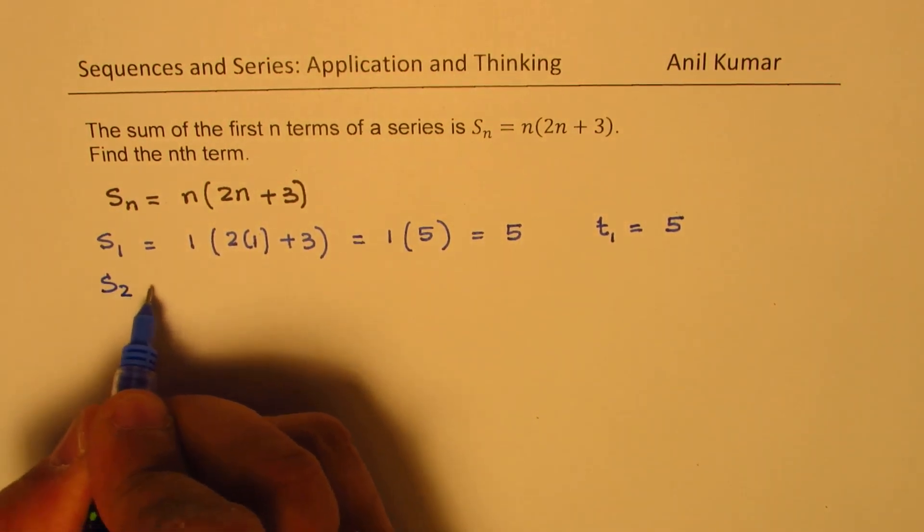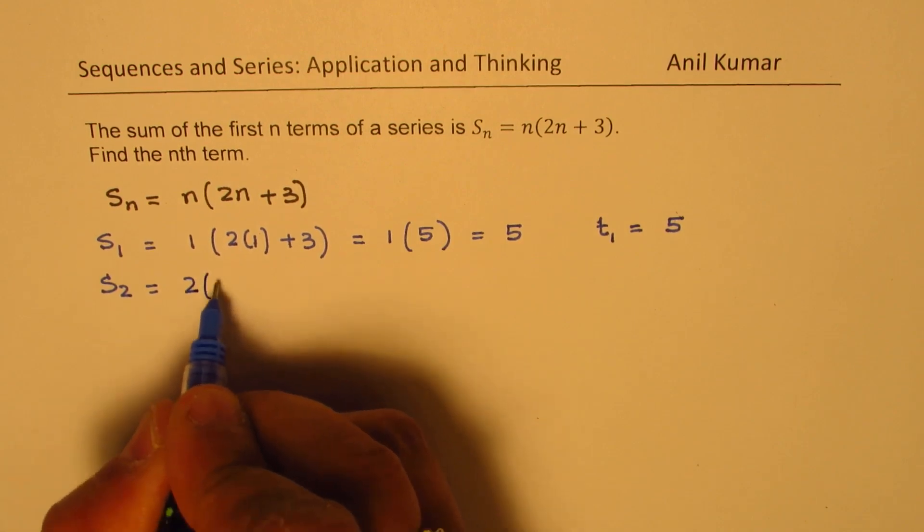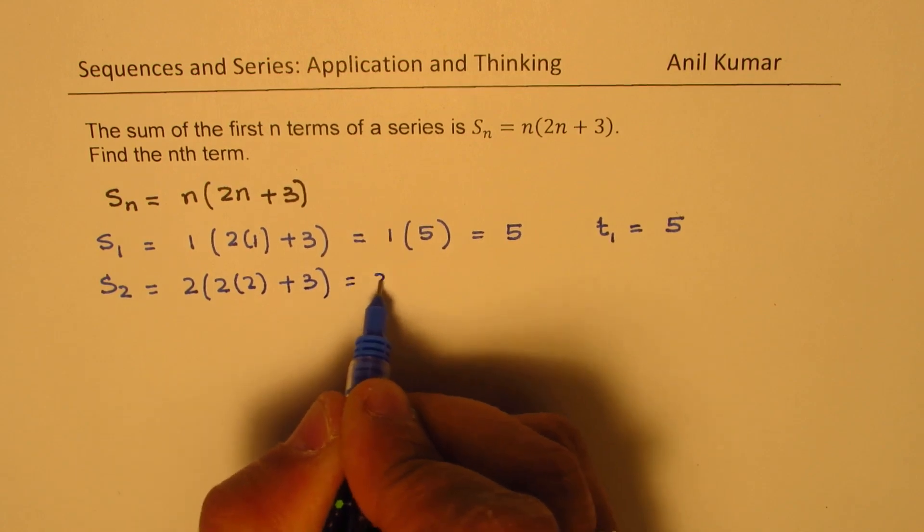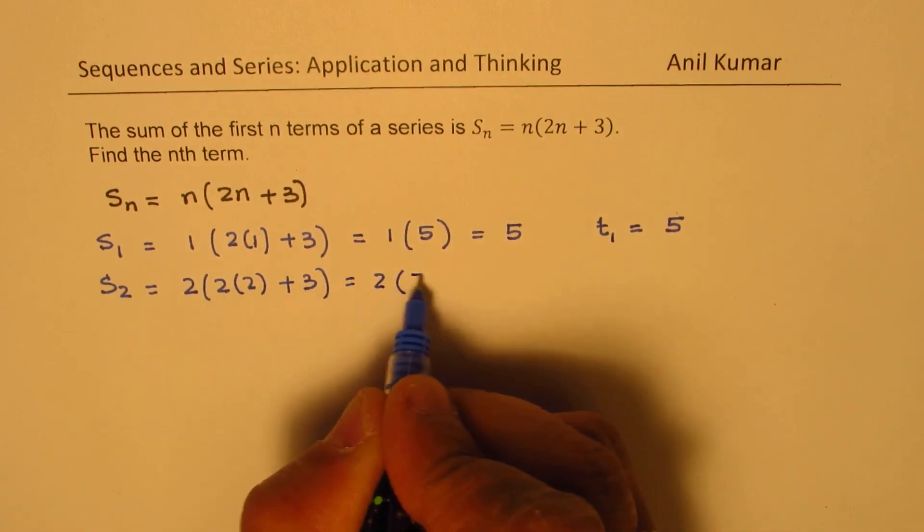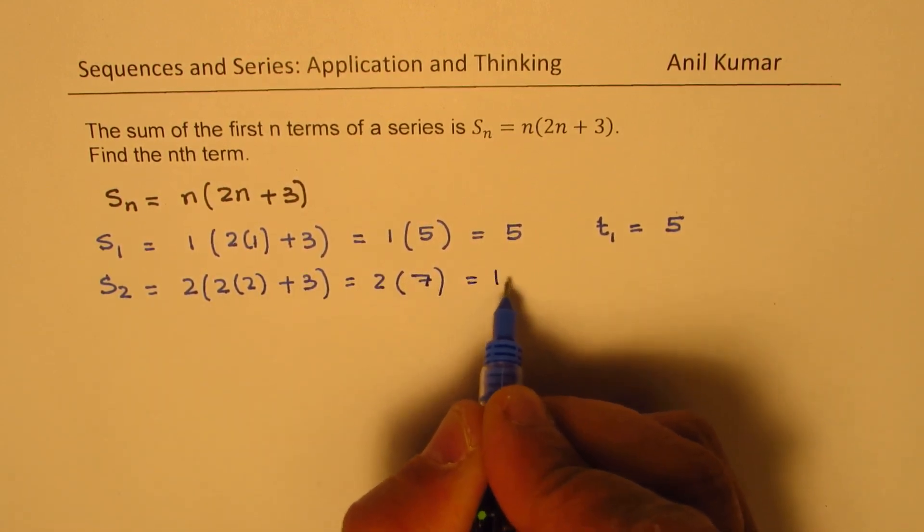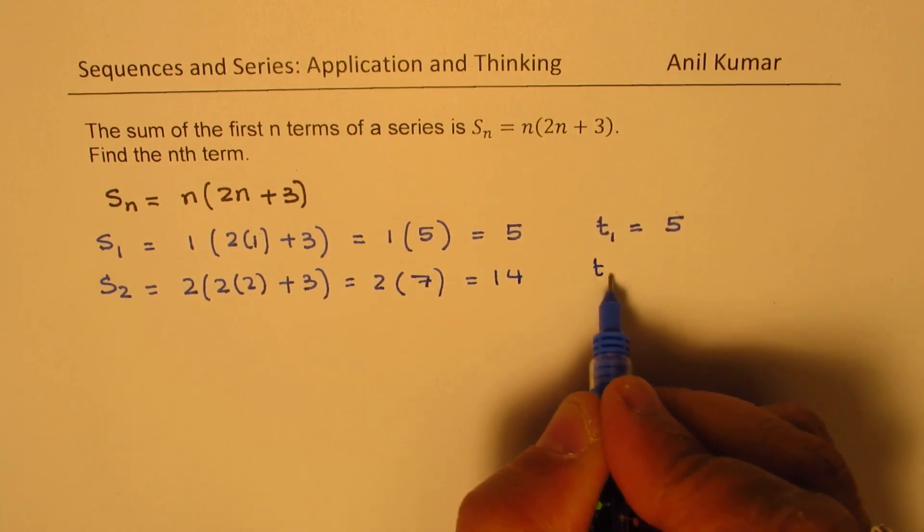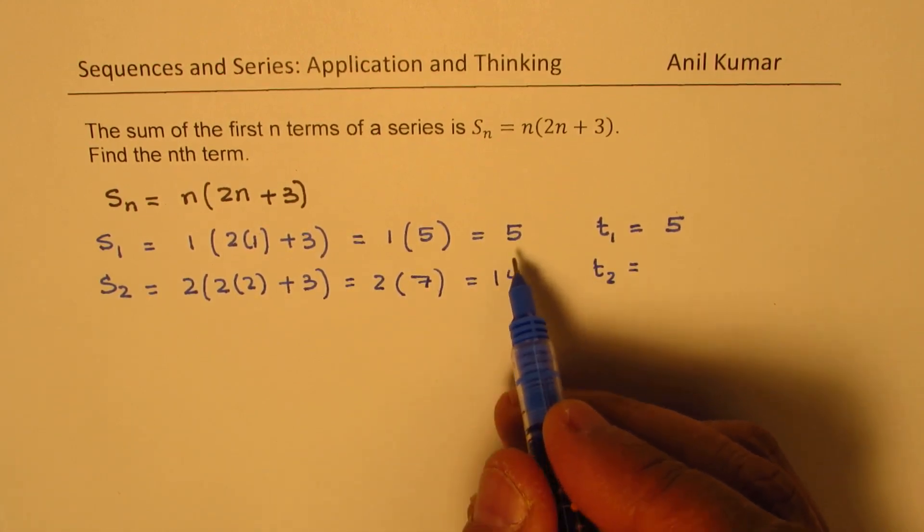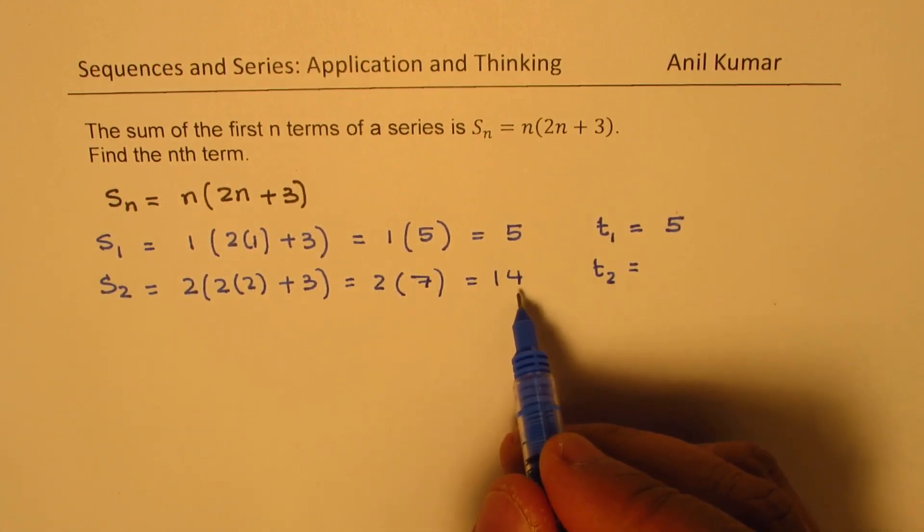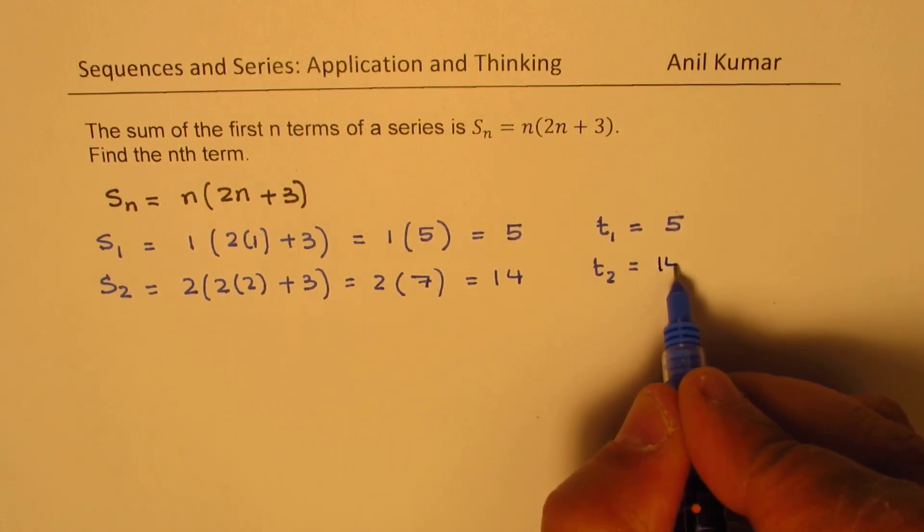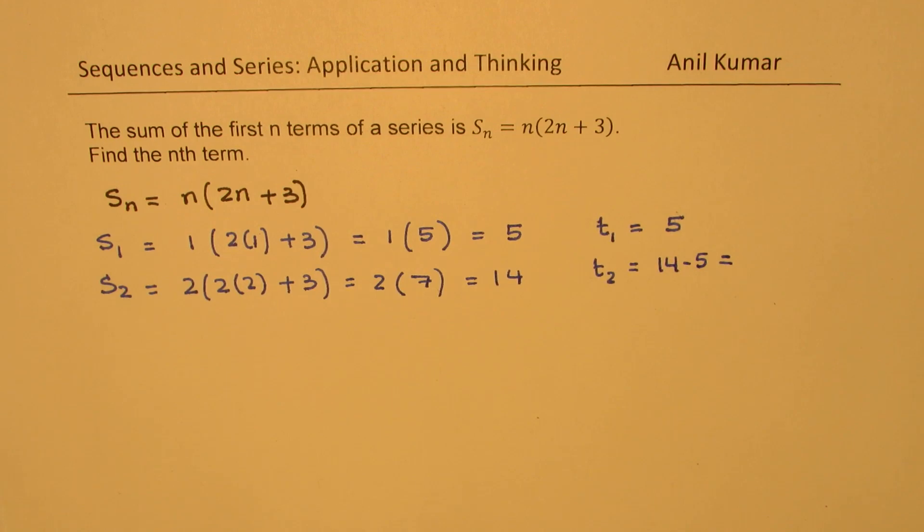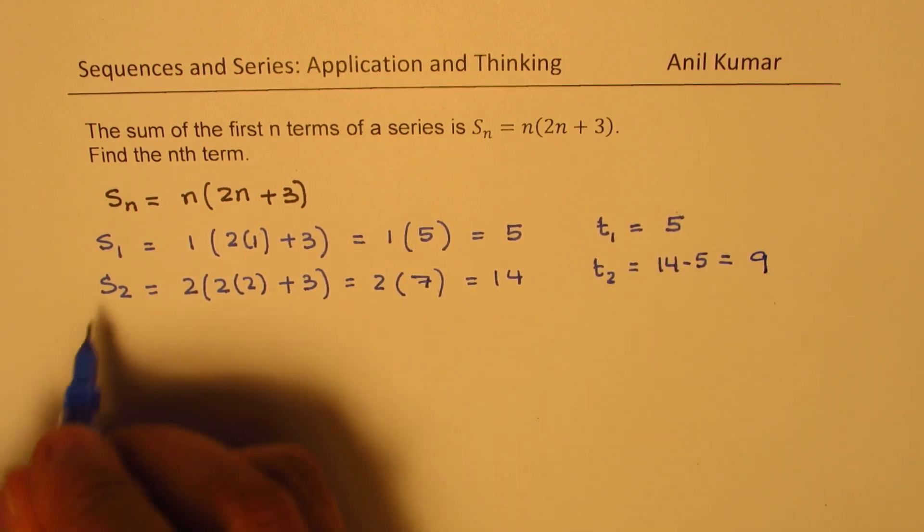Sum of 2 terms will be 2 times 2 times 2 plus 3, which is 2 times 4 plus 3 is 7, and that is 14. So what is going to be the second term? Well, this sum of these two terms is this much. So the second term will be 14 minus 5. What was added to get this? So the second term will be 9 for us.